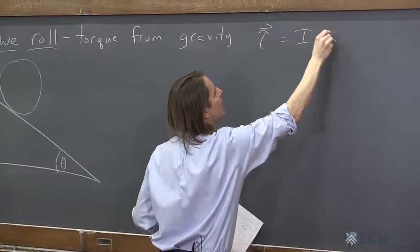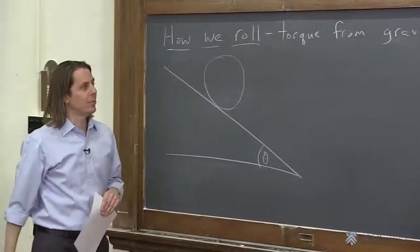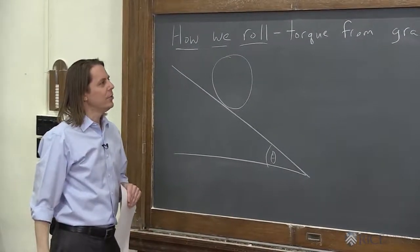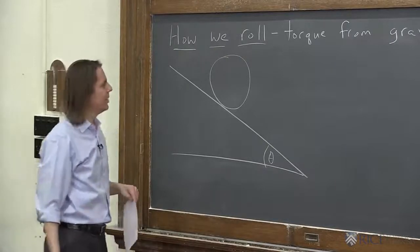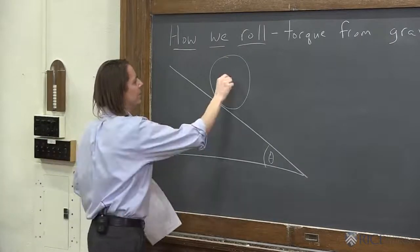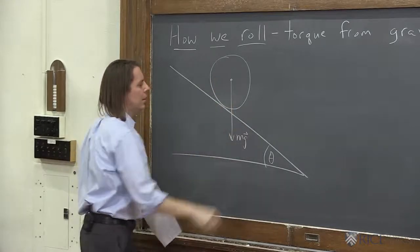Torque equals I alpha. And we're looking for alpha, the acceleration down the ramp. So let's see. Torque. Let's think, what are all the forces that might be causing a torque on this thing?